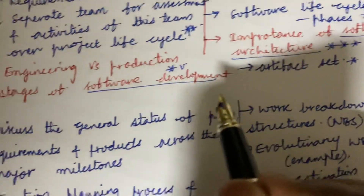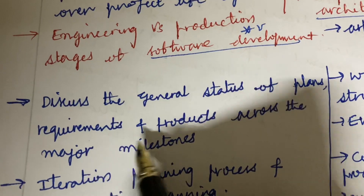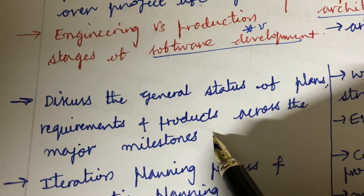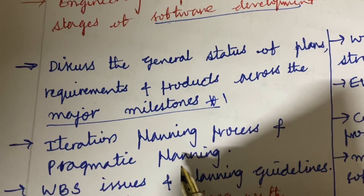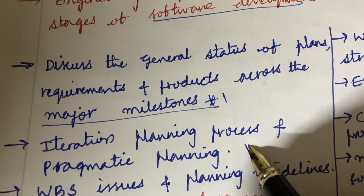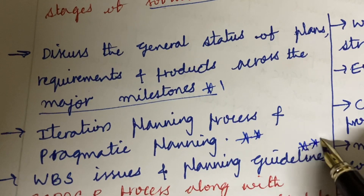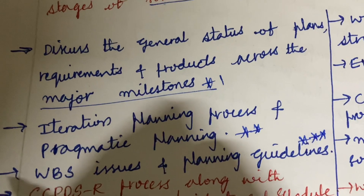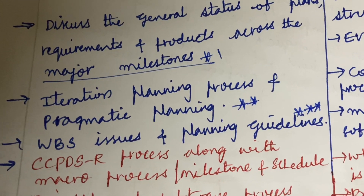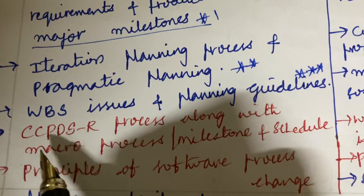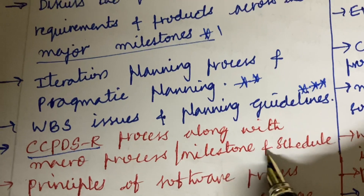Discussing the general status of plans, requirements, and products across the major milestones is said to be a top most question. Iteration process and pragmatic planning — the differences — and WBS issues and planning guidelines are also key topics. Students, note that the complete course is covered here; if you work out all these questions you will be getting 10 short questions as well as 10 long questions from this part.